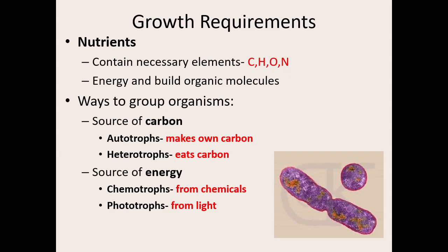They also need energy — they need to be able to build and make things. We can group organisms based on where they get their carbon and where they get their energy. Organisms that can make their own carbon molecules are called autotrophs — 'auto' means self. Heterotrophs cannot make carbon on their own; they must ingest carbon molecules. So you're either going to make your carbon molecules or you have to eat them.